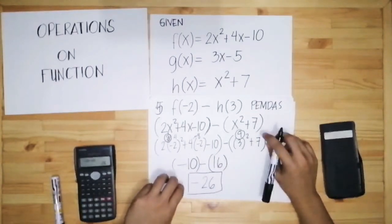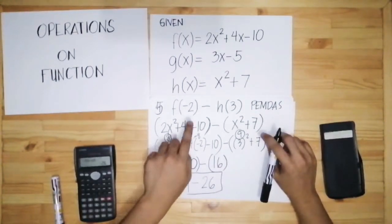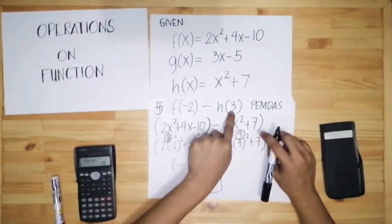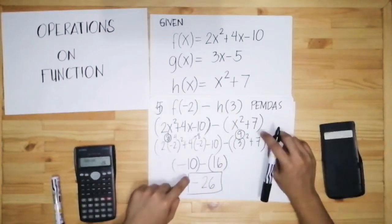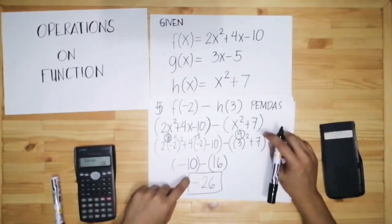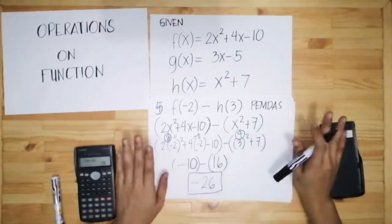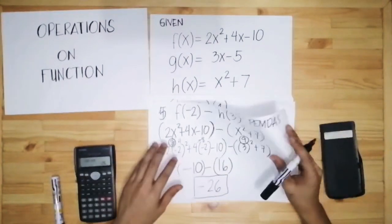Take note that if you have values for x, your final answer would be a number with no variables.